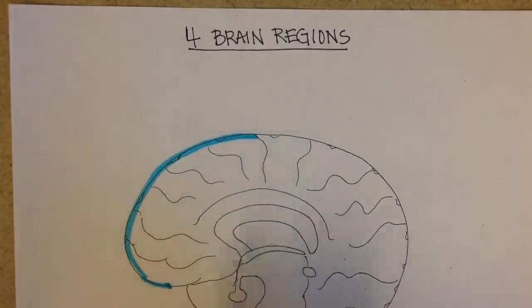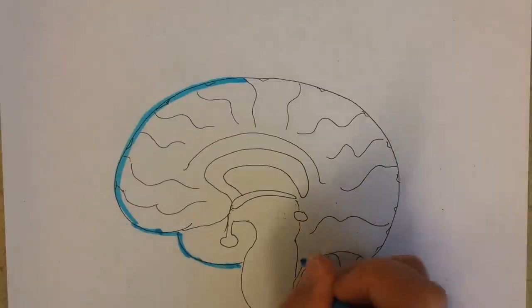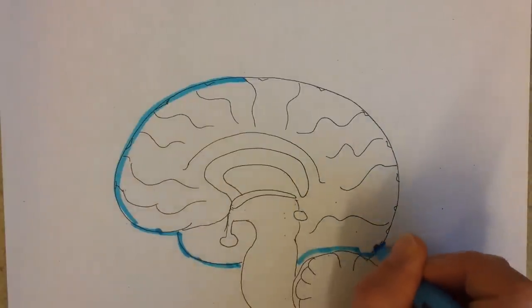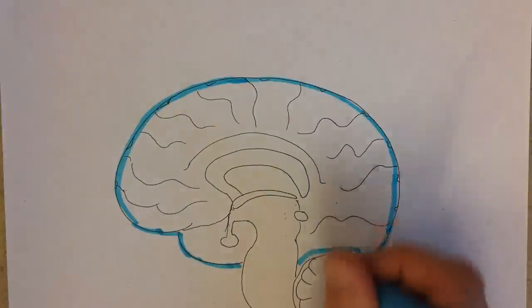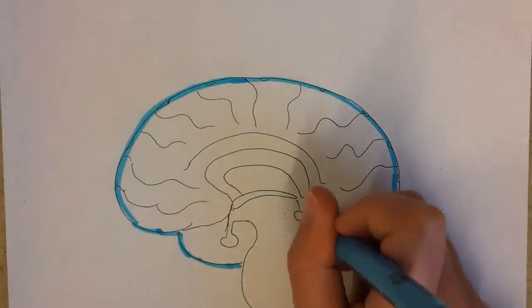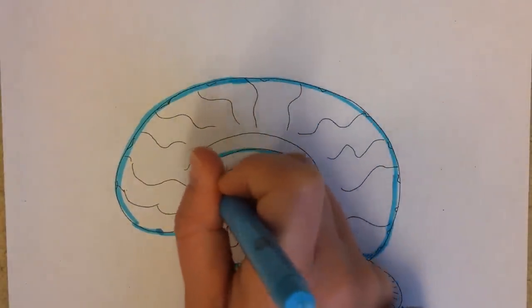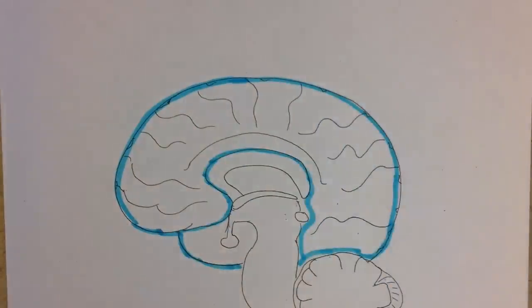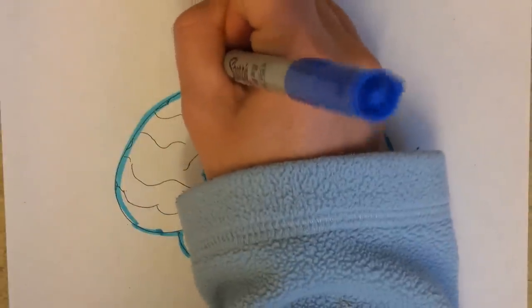This is the frontal lobe, and then you can see just a hint of the temporal lobe on the far side. This would be the occipital lobe, the parietal lobe, and then you can go up and around the corpus callosum, which separates the two cerebral hemispheres.